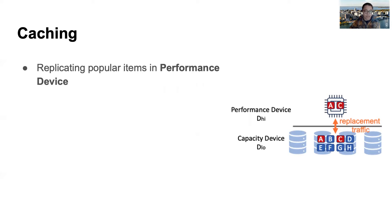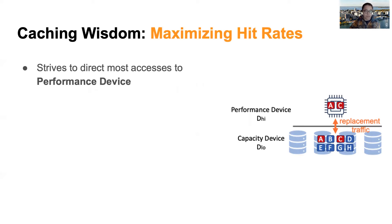As shown in this figure, caching leaves all data in the capacity device while replicating popular data in the fast performance device. To achieve good performance, caching always strives to direct most accesses to the fast performance device, and the wisdom is usually summarized as maximizing the hit rate.